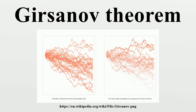We state the theorem first for the special case when the underlying stochastic process is a Wiener process. This special case is sufficient for risk-neutral pricing in the Black-Scholes model and in many other models. Let W be a Wiener process on the Wiener probability space.